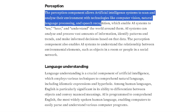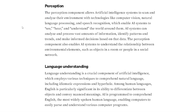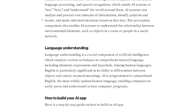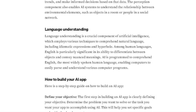The perception component allows AI systems to scan and analyze the environment with technologies like computer vision, natural language processing, and speech recognition, enabling AI systems to see, hear, and understand the world around them. AI systems can analyze and process vast amounts of information, identify patterns and trends, and make informed decisions. The perception component also enables AI systems to understand relationships between environmental elements, such as objects in a room or people in a social network.